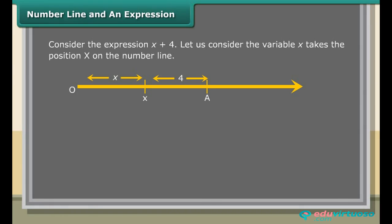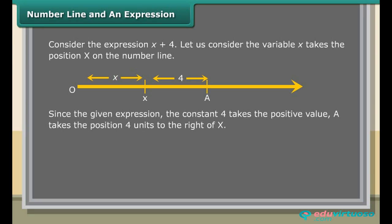Number line and an expression: Consider the expression x + 4. Let the variable x take position x on the number line. Since the constant 4 is positive, point A takes the position 4 units to the right of x. If the expression is x − 4, the position A will be to the left of x.